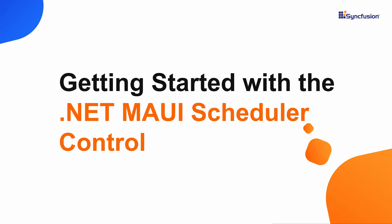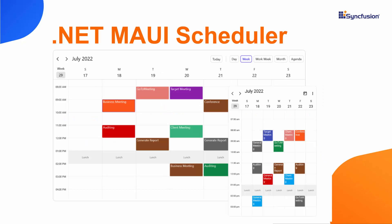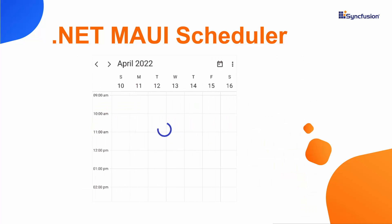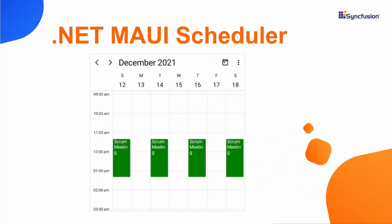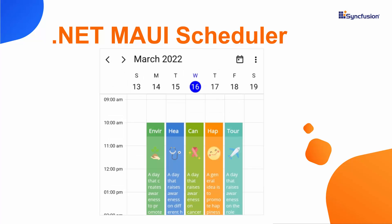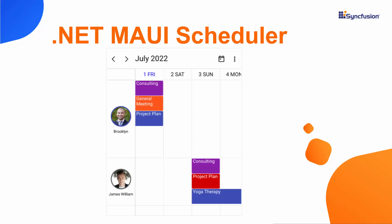Hi everyone, welcome to this video on how to get started with the .NET MAUI scheduler control. Using this scheduler control, you can manage time efficiently by scheduling and rescheduling events or appointments. You can also create recurring appointments, customize the look of the appointment, and group them based on resources.